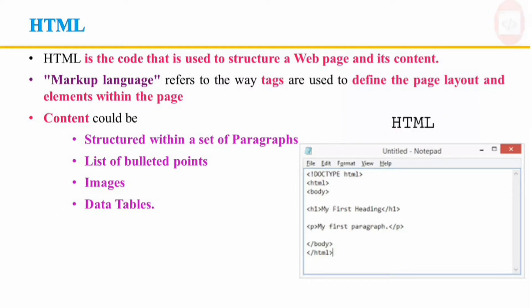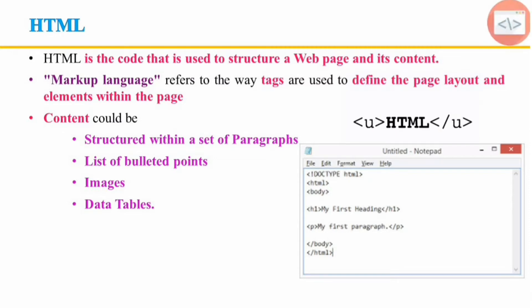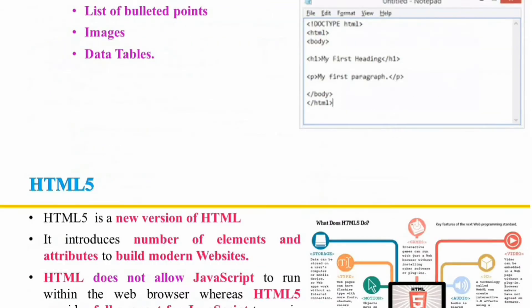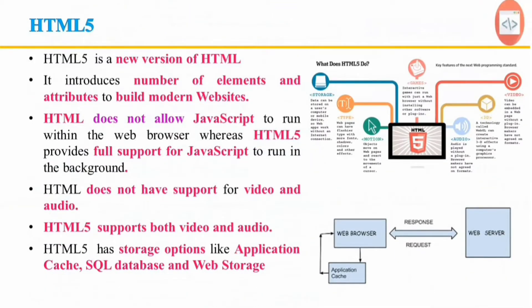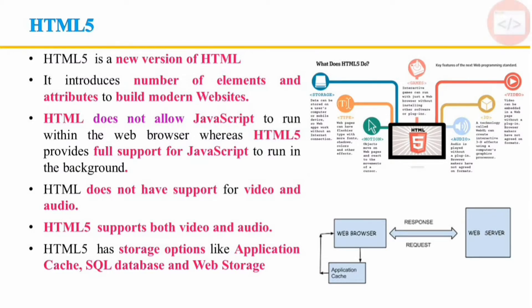HTML is a code used to structure a web page and its content. For example, the content could be structured within a set of paragraphs, a list of bullet points, or using images and data tables. HTML5 is the next major revision of HTML. HTML5 introduces a number of elements and attributes to build modern websites. HTML does not allow JavaScript to run within the web browser, whereas HTML5 provides full support for JavaScript to run in the background.